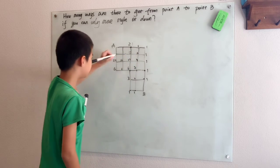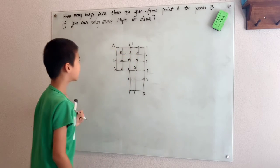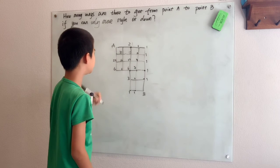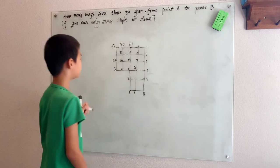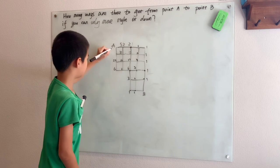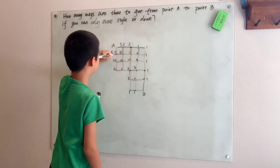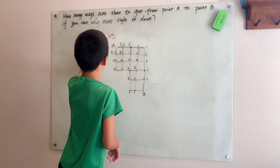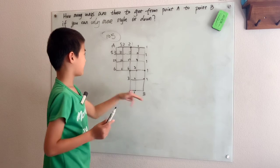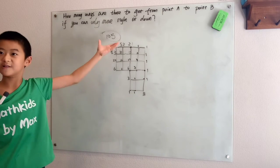And fifteen plus sixteen here is thirty one. Thirty one plus twenty one is fifty two. Thirty one plus twenty two is fifty three. And finally fifty three plus fifty two is one hundred and five ways to get from point A to point B. Good luck counting that.